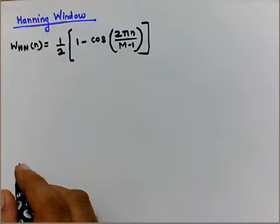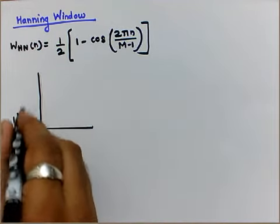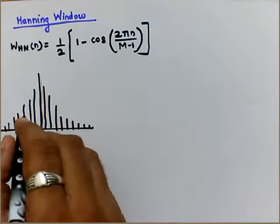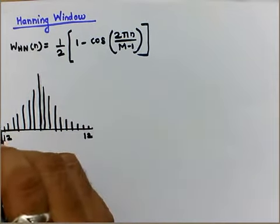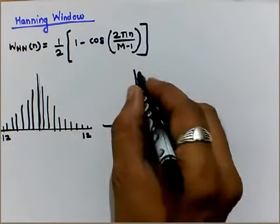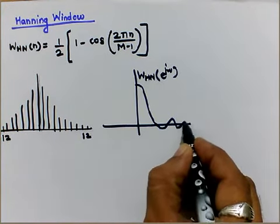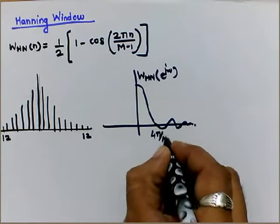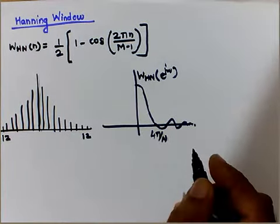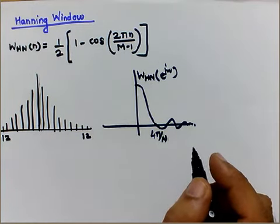For the Hanning window the approach is slightly different, but the cutoff frequencies are almost the same. Again considering M = 25, the time-domain window will range from -12 to +12, shaped like a mountain — rising, stabilizing, then decreasing. The frequency response W_HN(e^jω) similarly has a main lobe at 4π/N, and for a low-pass filter the cutoff frequency is again 0.5π.